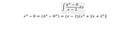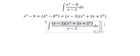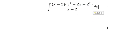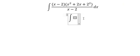Now we change the top one. x minus 2 and x minus 2 simplify together, so we get x power 2 plus 2x